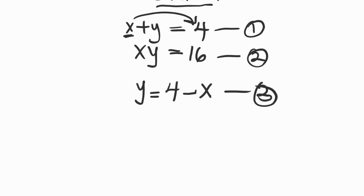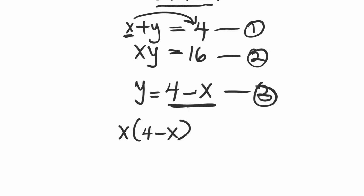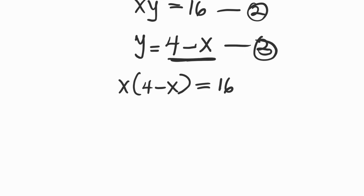Now let us substitute this value of y, which is 4 minus x, into equation 2. Meaning that wherever we find y, we replace it with 4 minus x. So we have x times (4 minus x) equals 16. If we expand the bracket, we have 4x minus x squared equals 16.